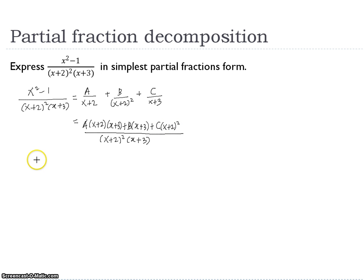So let's compare the numerator. x squared minus 1 equals A times (x plus 2)(x plus 3), plus B(x plus 3), plus C(x plus 2) squared. We will just compare the numerator.